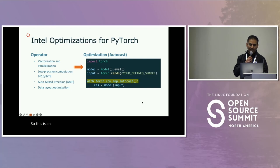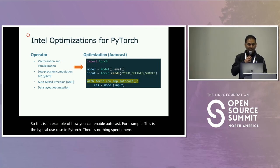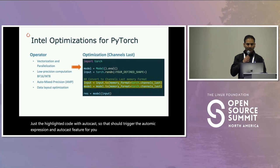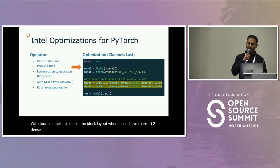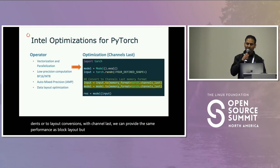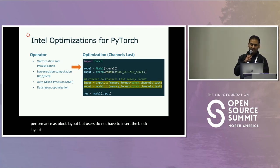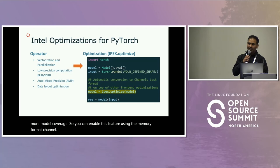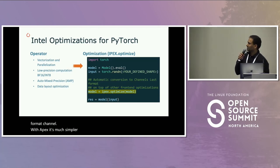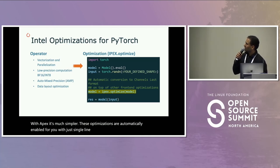Here's an example of how to enable Autocast — this is the typical use case in PyTorch with nothing special, just highlighted code with Autocast. That should trigger the automatic mixed precision Autocast feature. For channel last: unlike block layout where users had to insert two dense/layout conversions, with channel last we achieve the same performance as block layout without requiring those block layout conversions. You can enable this feature using memory_format=torch.channels_last. With IPEX it's much simpler — these optimizations are automatically enabled with a single line of code: IPEX.optimize.